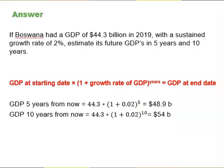We use the compound growth formula to answer this question. To get the future GDP level, we take today's GDP level times 1 plus the growth rate, then raise that to the power of how many years we look into the future. For Botswana's GDP 5 years from now, we take GDP today — which is $44.3 billion — multiply by 1 plus the growth rate of 2% per year, and raise to the power of 5 years. We get a potential GDP 5 years from now of $48.9 billion.